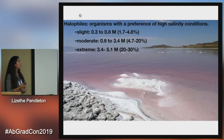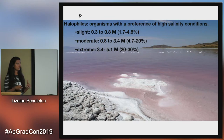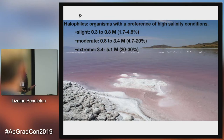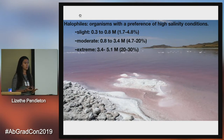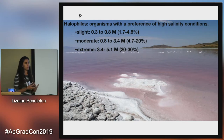Halophiles are organisms with a preference for high salinity conditions. Within the halophile designation, there are slight, moderate, and extreme preferences, depending on the salt concentration. A local example is the Great Salt Lake, which is five times saltier than the ocean. And this pink color is actually a bunch of halophiles in the Archaean domain.